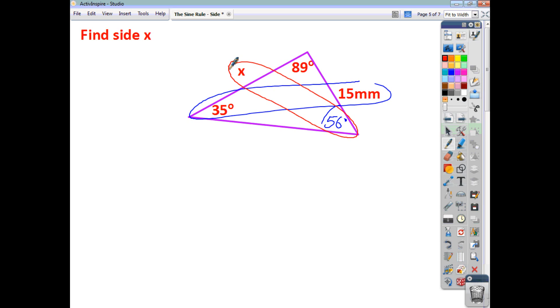So, although we weren't presented with two pairs of opposites, we've been able to find two pairs of opposites within this question. So, again, carry on as normal. Sine rule. So, we'll say that x over sine 56, that's going to be equal to 15 over sine 35.